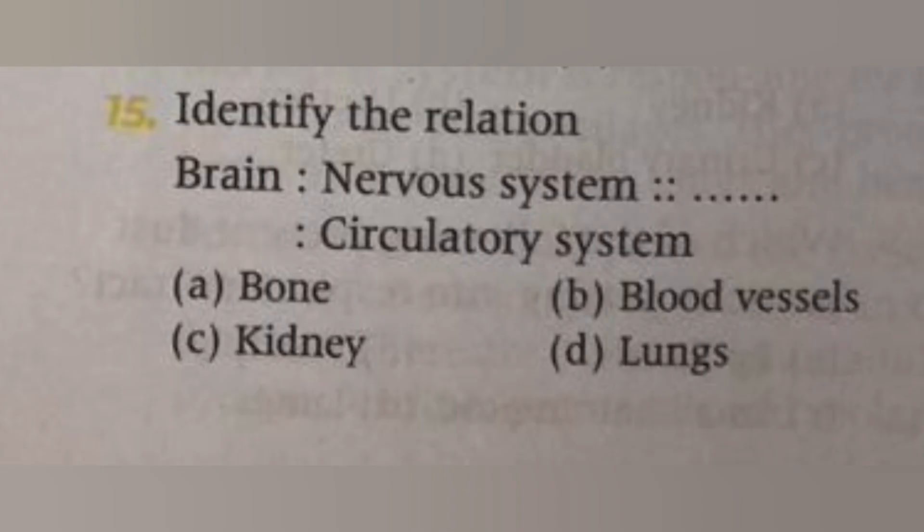Next, identify the relationship: brain → nervous system; circulatory system → ? Options: bone, blood vessels, kidney, lungs. The answer is B, blood vessels.